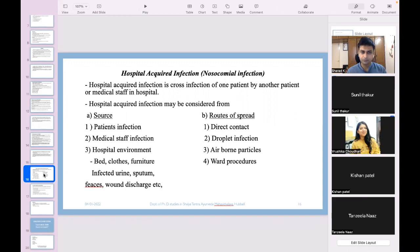Nosocomial infections, hospital-acquired infections. Hospital-acquired infection is a cross-infection of one patient by another patient or medical staff. The patient when he visits or is admitted to the hospital is fine, but while discharged or during the stay, he gets some other infection. These we term as hospital-acquired infections or nosocomial infections. They may be considered from source and routes of spread. Sources include patient's infection, medical staff infection and hospital environment. Routes include direct contact, droplet infection, airborne particles and ward procedures. All these are potential enough to transmit one disease to a patient who may not be suffering from it. It may be hospital environment involving beds, clothes, furniture, utensils, infected urine, stool, feces, wound discharge, pus, any bodily fluid. Through this it can be spread. We have to avoid these kinds of nosocomial infection.